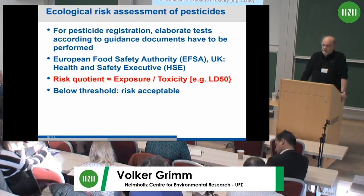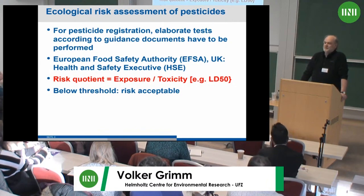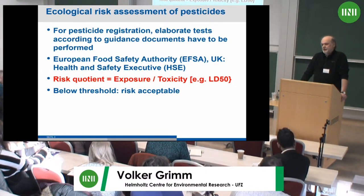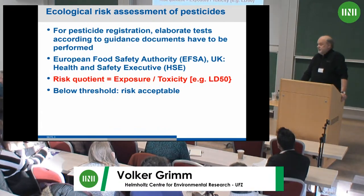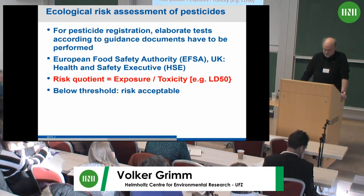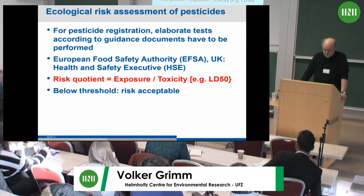What affects the risk? Exposure — how much are individuals exposed to the pesticide — and toxicity. If you have very high toxicity, you should have very low exposure. Toxicity is the denominator because it's measured by lethal dose (LD). Highly toxic means already a very low dose is killing the animals.